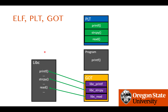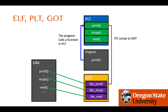As a diagram: a printf call in the program's code section first makes a function call to PLT, then PLT jumps to GOT, and GOT stores the address of printf and makes the final call to printf in library space. Each GOT entry stores the address of a target function — one GOT entry per PLT — and we have PLT entries for all library functions used.